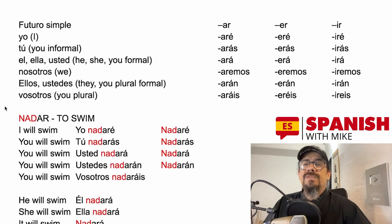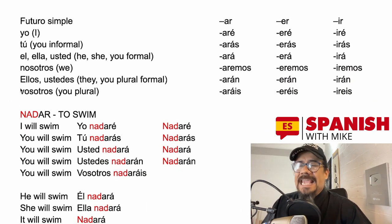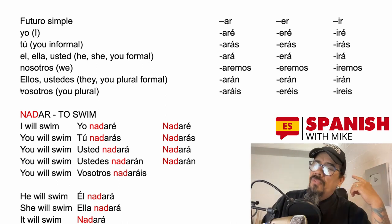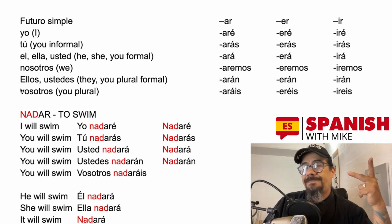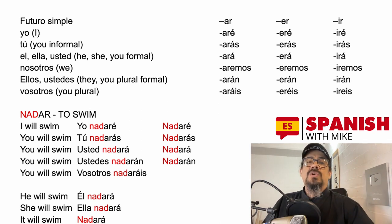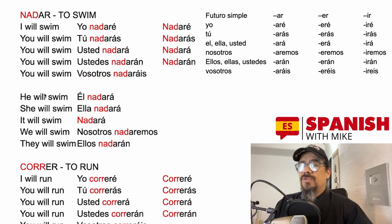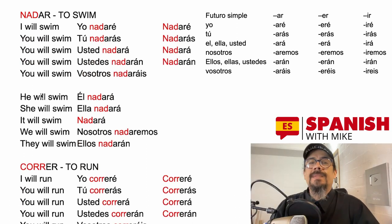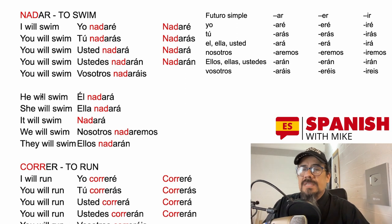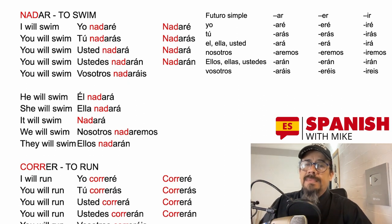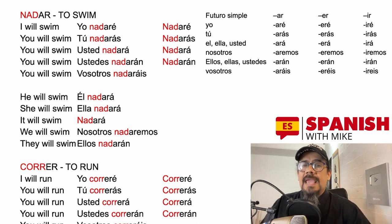Now let's move to the simple future. We have the same structure with different columns depending on the regular verb's infinitive ending. For nadar — first column: I will swim = yo nadaré. You will swim = tú nadarás (informal). Usted nadará (formal). Ustedes nadarán (plural). Vosotros nadaráis, if in Spain. He will swim = él nadará. She will swim = ella nadará. It will swim = nadará. We will swim = nosotros nadaremos. They will swim = ellos nadarán.